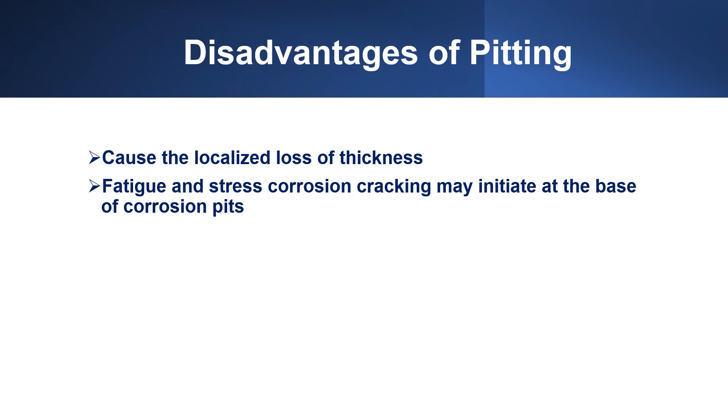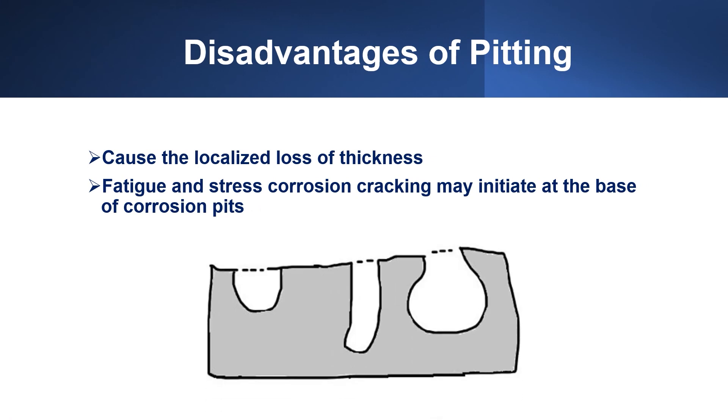Pitting corrosion can cause the localized loss of thickness. Besides, fatigue and stress corrosion cracking may initiate at the base of corrosion pits.